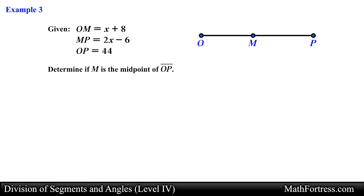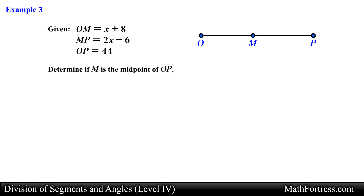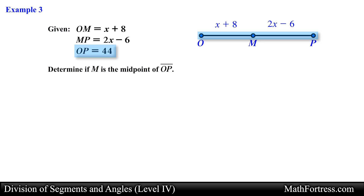Let's try the next example. Given that the length of segment OM equals x plus 8, the length of segment MP equals 2x minus 6, and the length of segment OP equals 44, determine if point M is the midpoint of segment OP. We will use the definition of a midpoint: if M is the midpoint, it bisects OP into two congruent segments each measuring half of 44, which is 22.